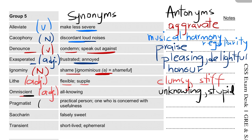'Pragmatist' — if you know this word, you will be able to identify it. It means a practical person, or one who is concerned with usefulness. Its antonyms are 'idealist' and 'optimist' as a near antonym.